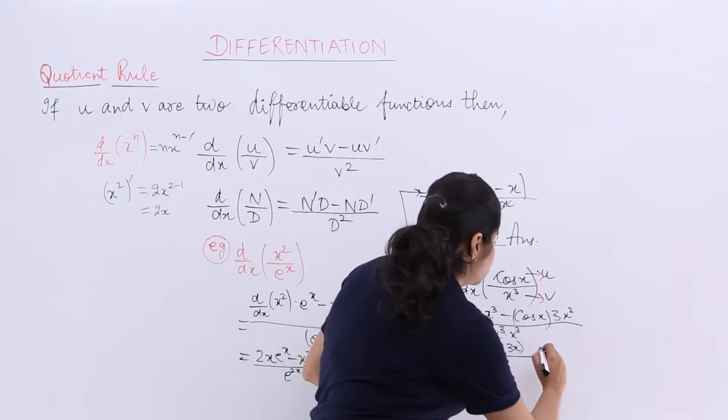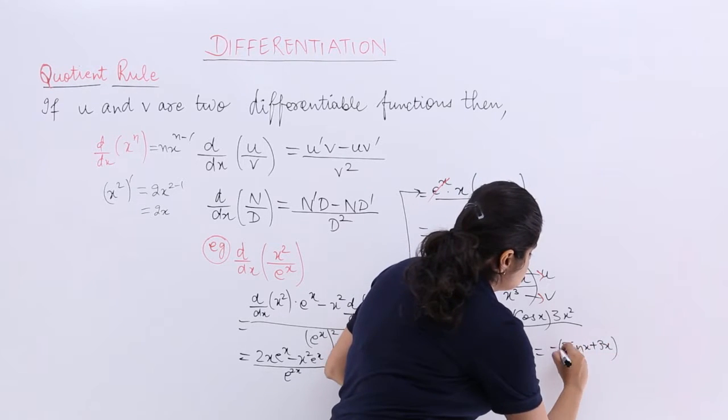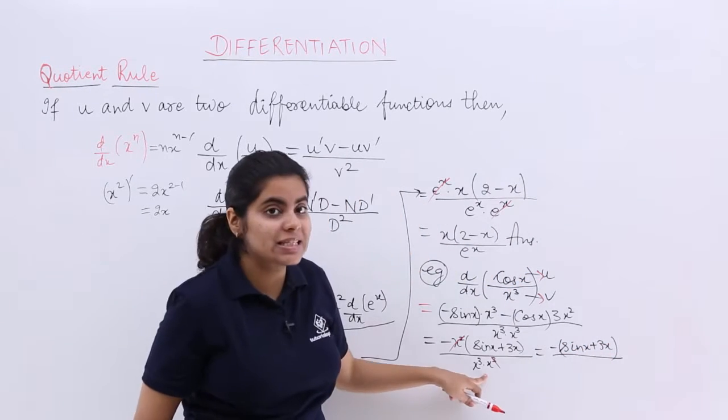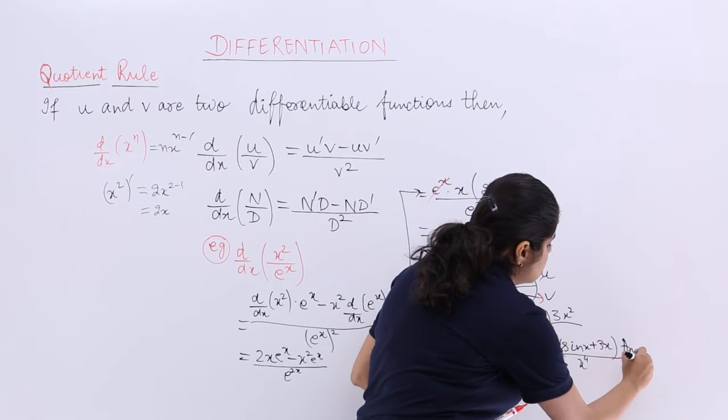So the final answer is what? Let's write it here. Minus sin x plus 3x upon x cube into x, which is x raised to the power 4. So that is your answer.